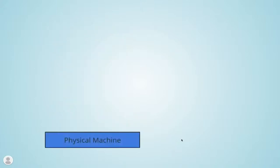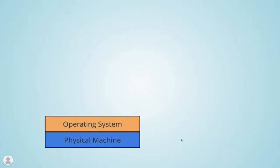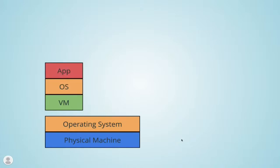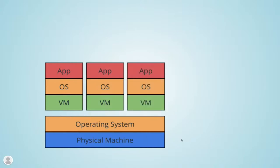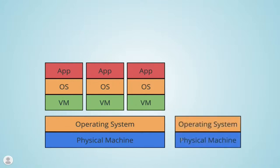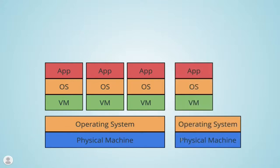With virtual machines our diagram looks a little different. There is a physical machine and an operating system maintained by a service provider. From that service provider you buy a VM, install your own operating system, and deploy your app. If you need more of these apps you can just buy more VMs, and you don't have to care about how many physical machines are underlying — that's the service provided by the cloud provider. There is a red line: anything below is managed by your service provider, anything above is your responsibility.